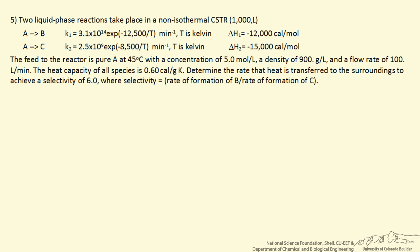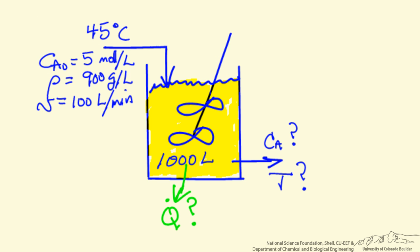So first thing we do is draw a diagram to represent the process. And I've labeled the feed stream, the volume of the reactor. I've also labeled the unknown, the temperature, the outlet concentration of reactant, and the heat removal.